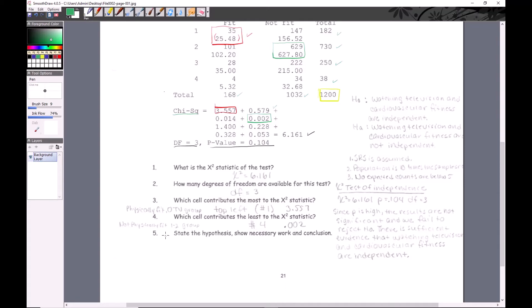State the hypothesis, show the necessary work and conclusion. H0 is watching television and cardiovascular fitness are independent - remember, independent is always H0. HA is watching television and cardiovascular fitness are not independent. They didn't say anything about randomness, so we're assuming the population is 10 times the sample size. I wanted to point out something - this is a cell, and you notice this value is less than five. Is that a violation of assumptions?